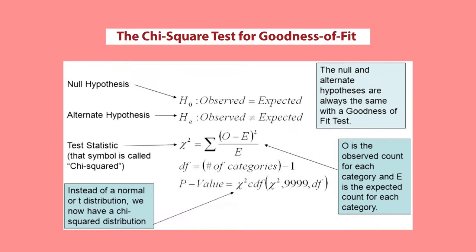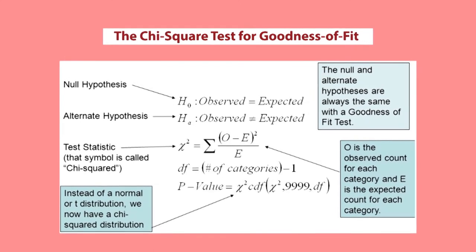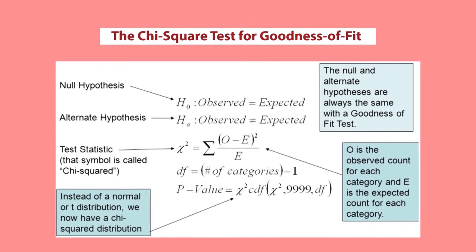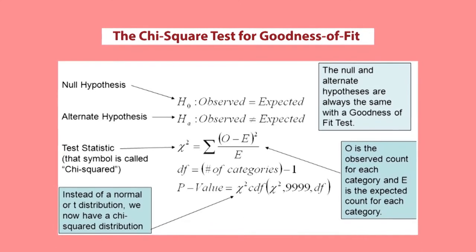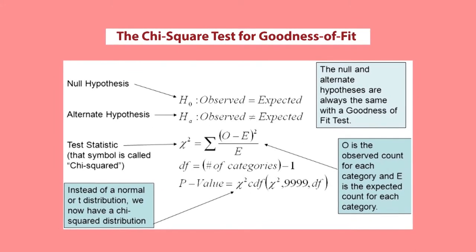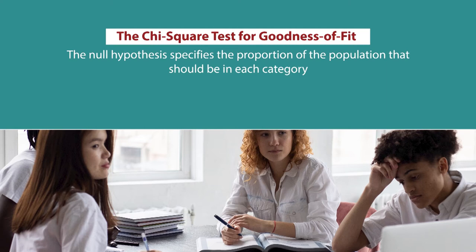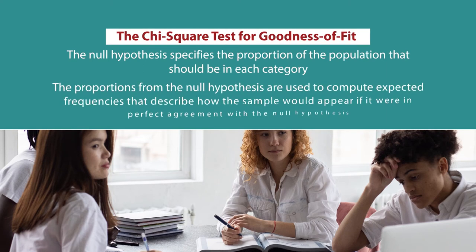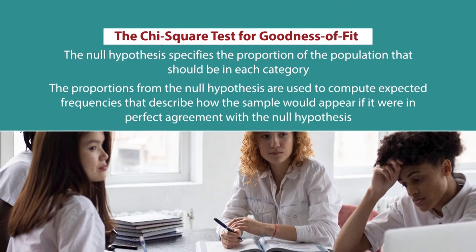For the Chi-square goodness of fit test, H0 is the null hypothesis and HA is the alternate hypothesis. The test statistic is χ² = Σ (O − E)² / E, with degrees of freedom equal to the number of categories minus 1. Instead of a normal or T distribution, we use a Chi-square distribution. The null and alternate hypotheses are always the same format for the goodness of fit test: O is the observed count for each category and E is the expected count. The null hypothesis specifies the proportion of the population that should be in each category, and those proportions are used to compute expected frequencies describing how the sample would appear in perfect agreement with H0.